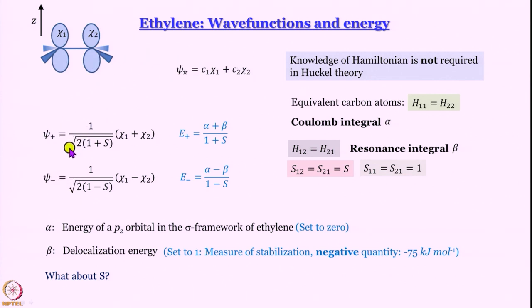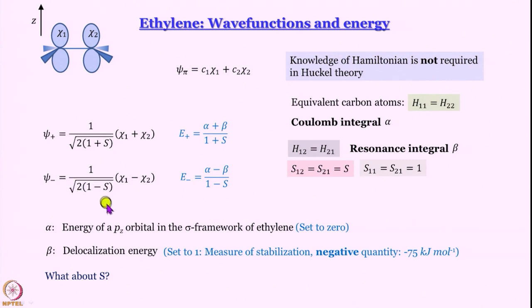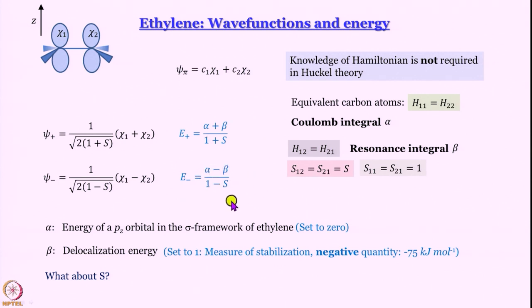Psi-plus, the bonding orbital, was 1 divided by root over 2(1+S) multiplied by (chi-1 + chi-2), and psi-minus, the antibonding orbital, was 1 divided by root over 2(1−S) multiplied by (chi-1 − chi-2). The associated energies were E-plus equal to (alpha + beta)/(1 + S) and E-minus equal to (alpha − beta)/(1 − S).